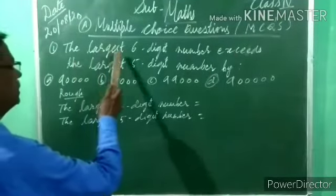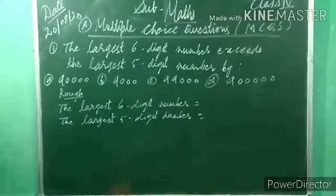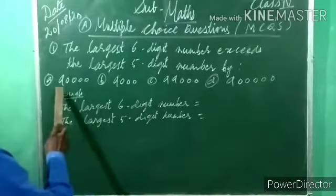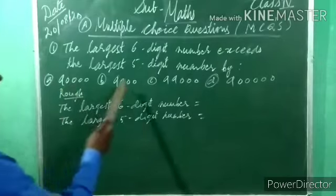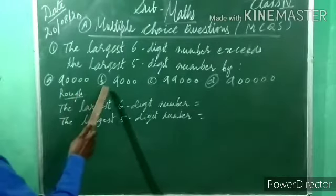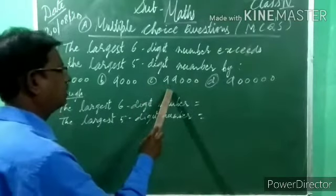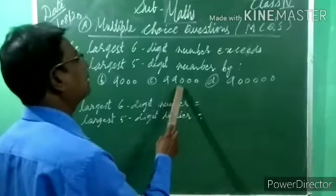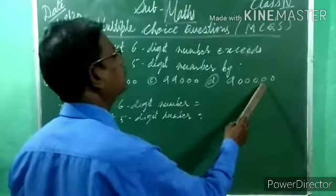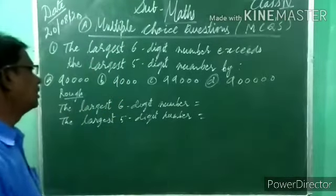First question: the largest six-digit number exceeds the largest five-digit number by — options: A) 90,000, B) 9,000, C) 99,000, D) 9 lakh (1,00,000). Among these four options one is right and three are wrong.